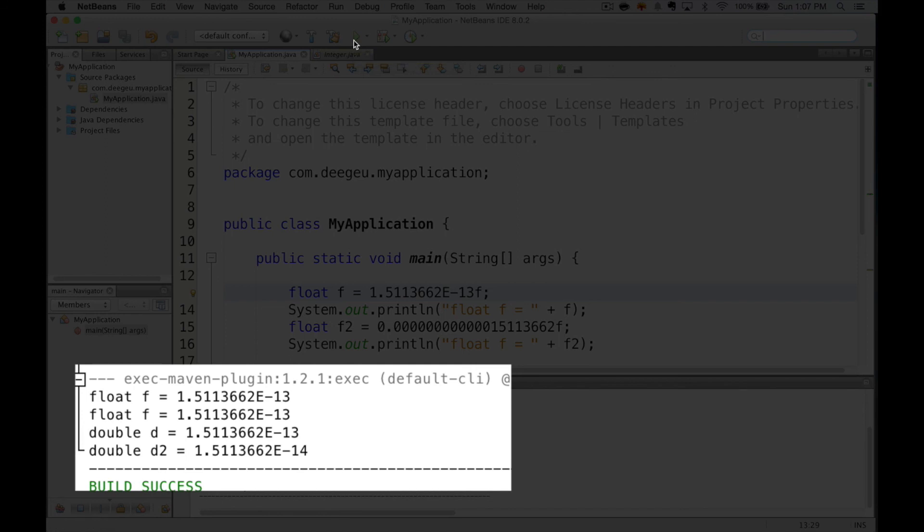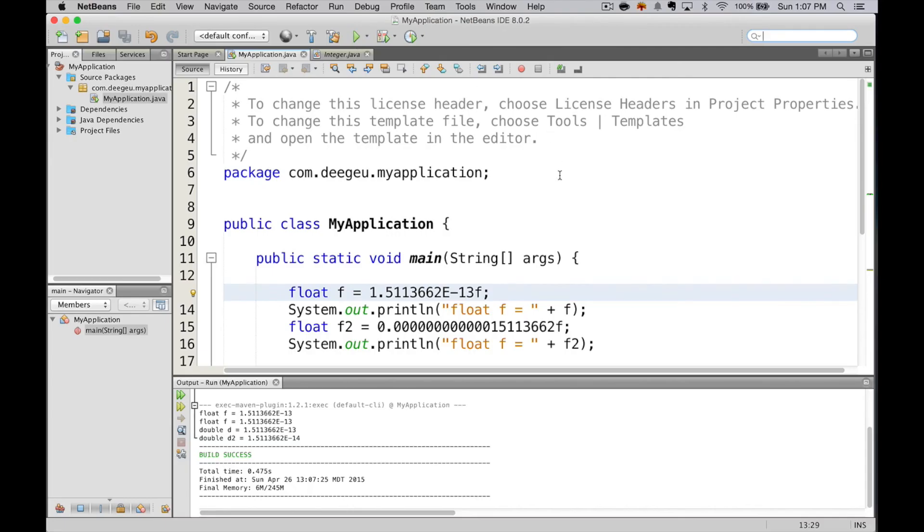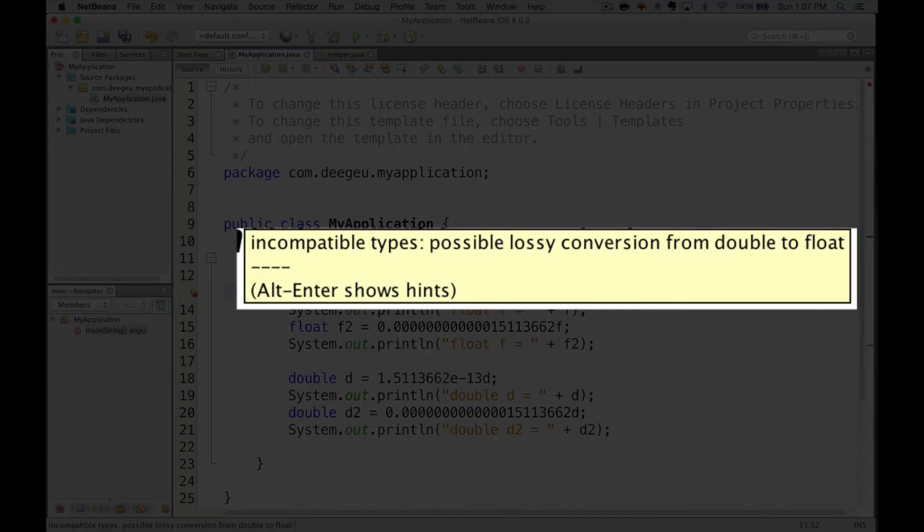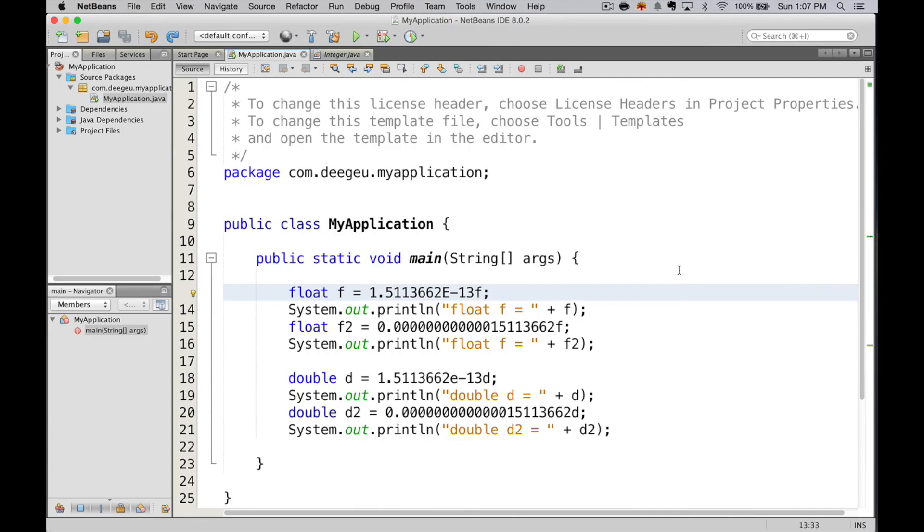Let's go try creating that error where we assign a double to a float. We'll try creating a float, then assigning a number without the F at the end. And we get that lossy conversion error again. That's okay though, because most of the time you're going to be working with doubles. There's really little use for using floats these days.